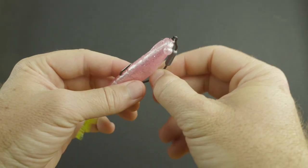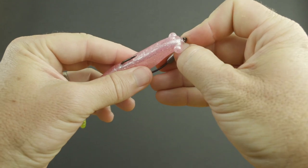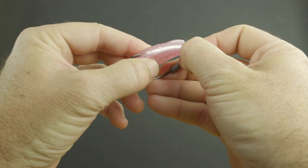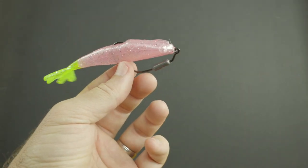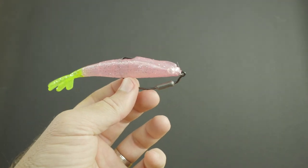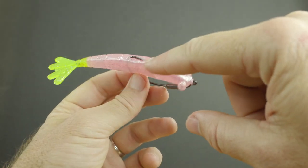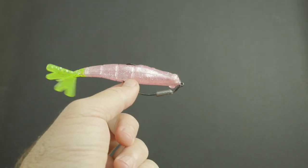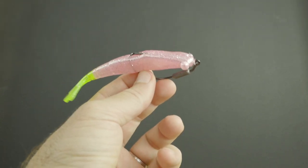And now this lure is rigged ready to rock. And as mentioned before, if we're skipping up under mangroves where we need to get extra weedless, where we know we're likely going to bump up on some snaggy type of structure, skin hook the point and now this thing is super weedless.